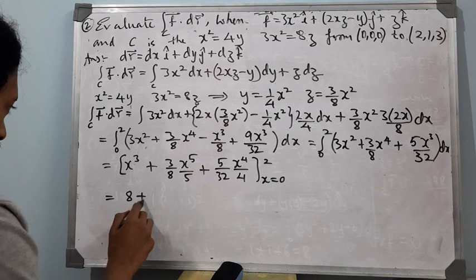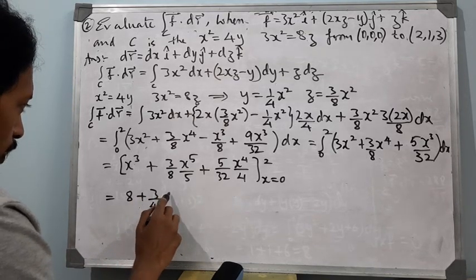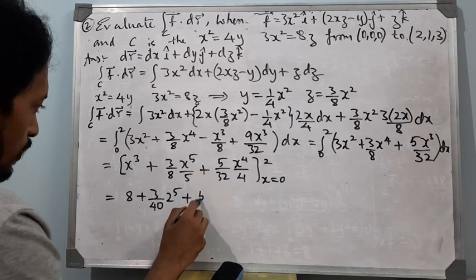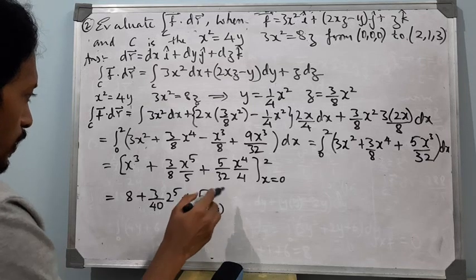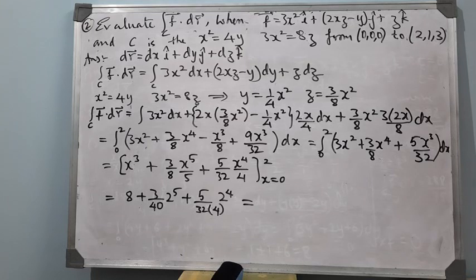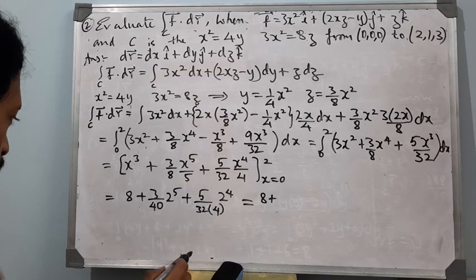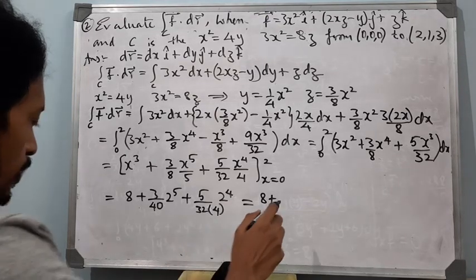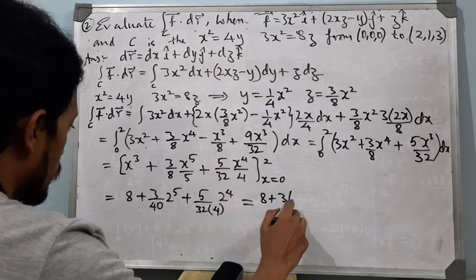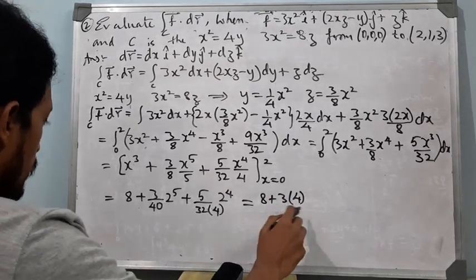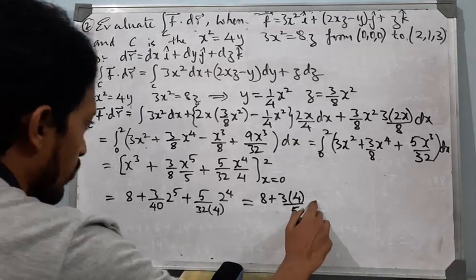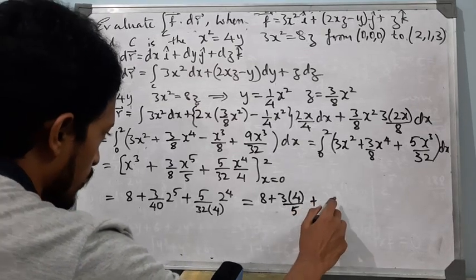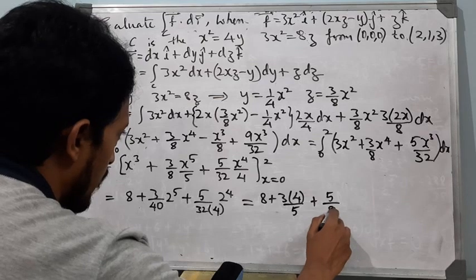Substituting x=2 gives 8 + (3/40)·32 + (5/32)·4·16, which simplifies further. This gives 8 + 12/5 + 5/8, which equals approximately 3·4/5 + 5/8, yielding the final answer.